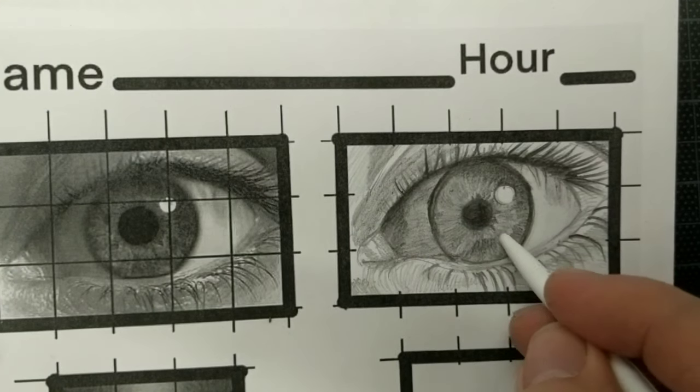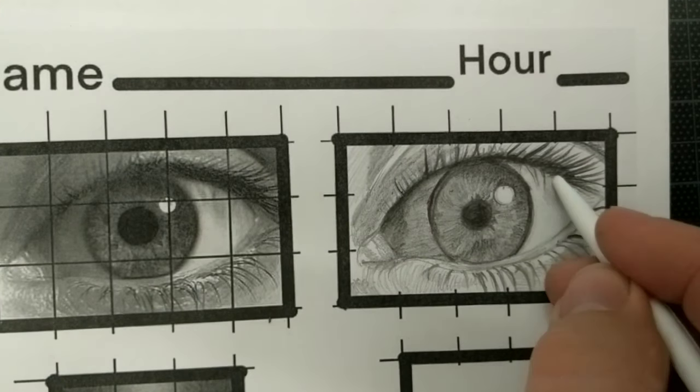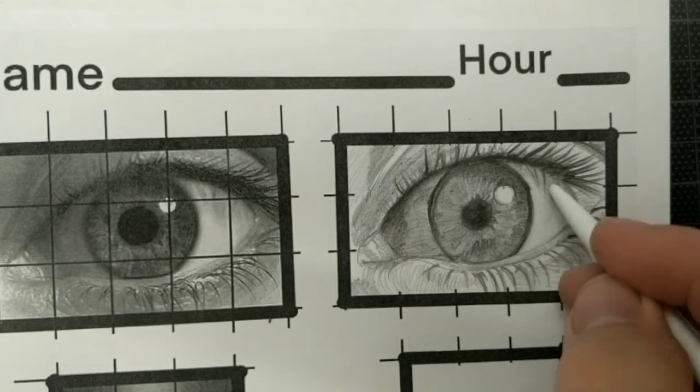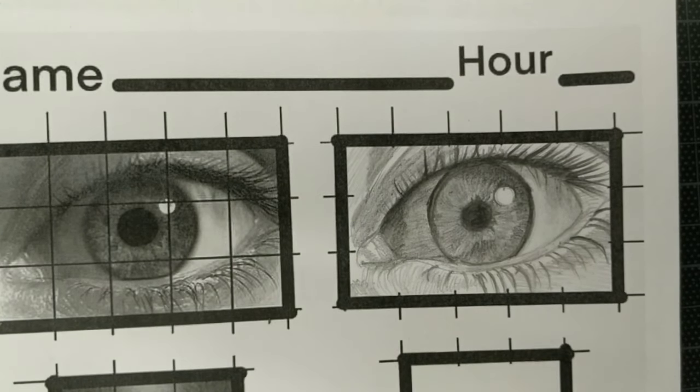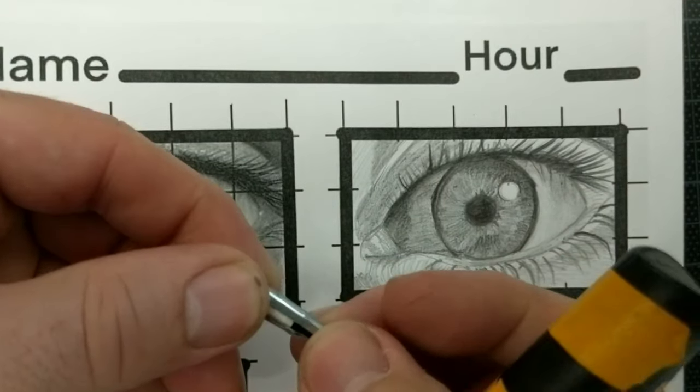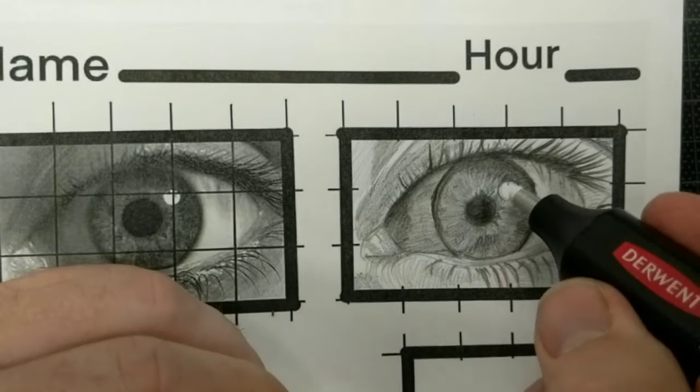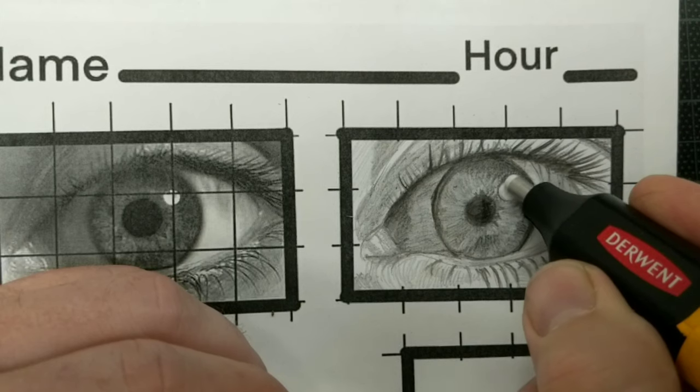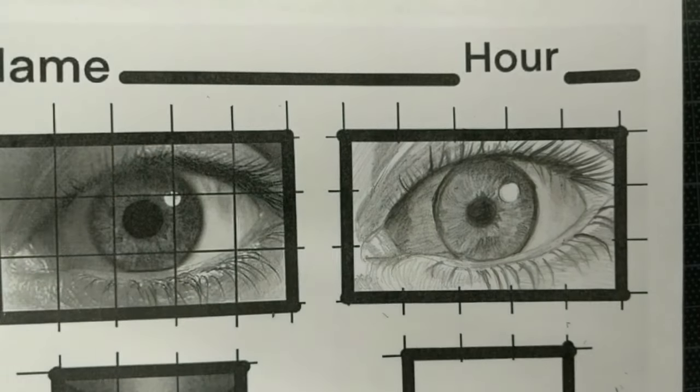I like to tell my students, this is something a friend of mine told me, and I thought it was great wisdom when it comes to shading or painting. The only true white you're going to use when you're doing a painting, the only white you're going to leave behind is the white that's either an actual light source.